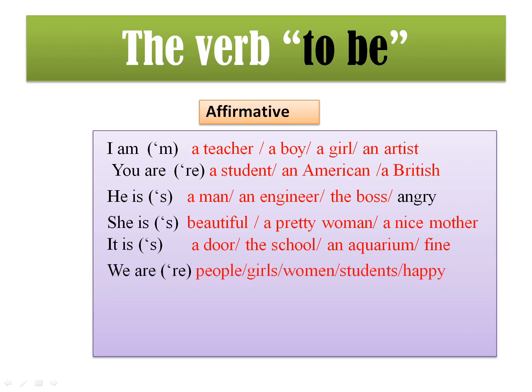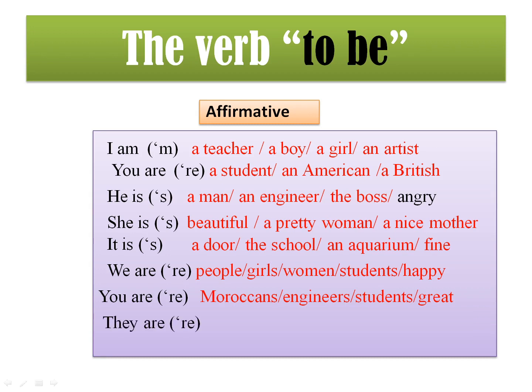Continuing with the affirmative form: We are — we're people, we're girls, we're students, we're happy. You are — you're Moroccans, you're engineers, you're great. They are — they are my friends, they are glad, they're kids, they're happy, they're famous.